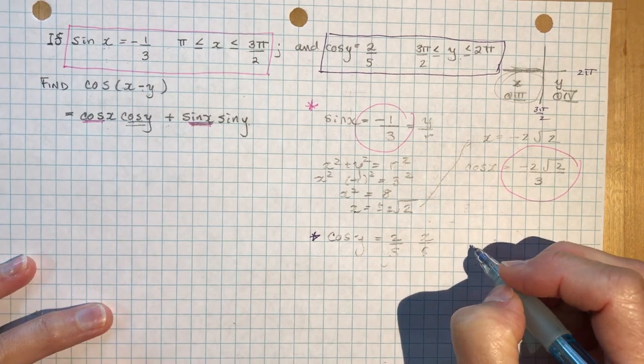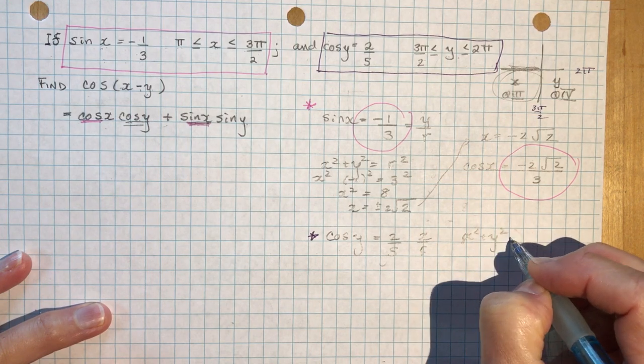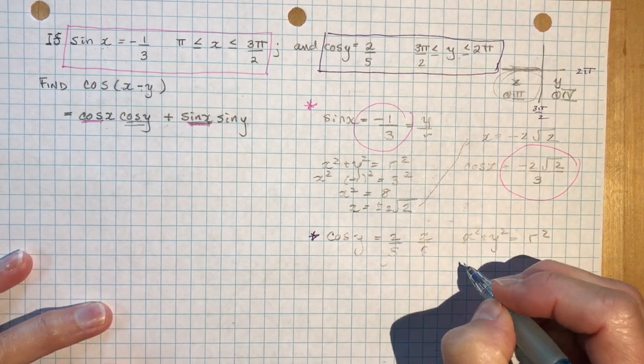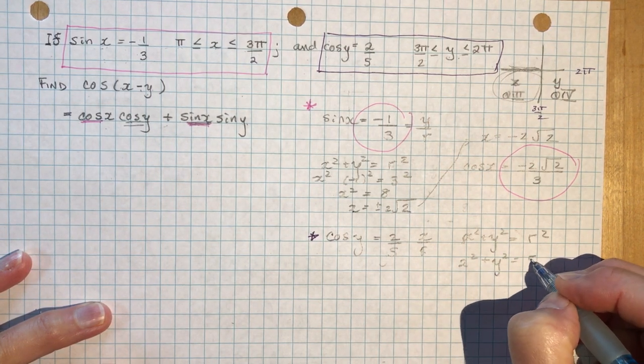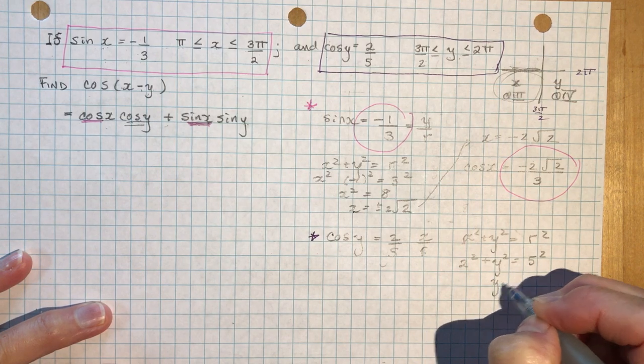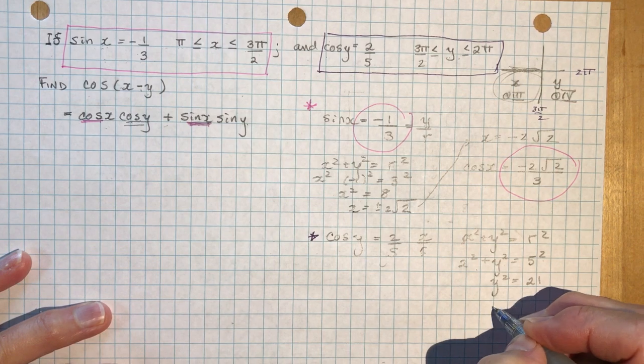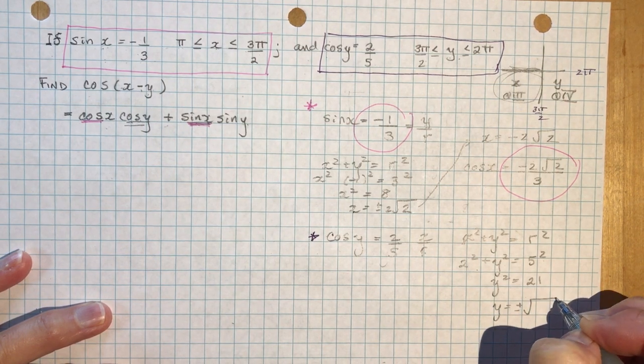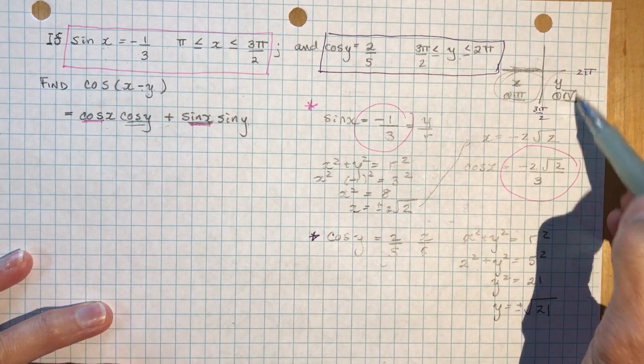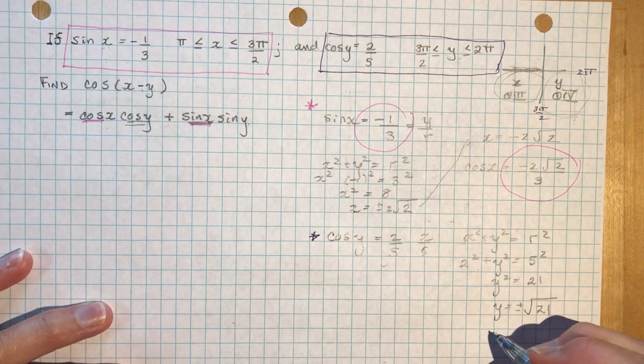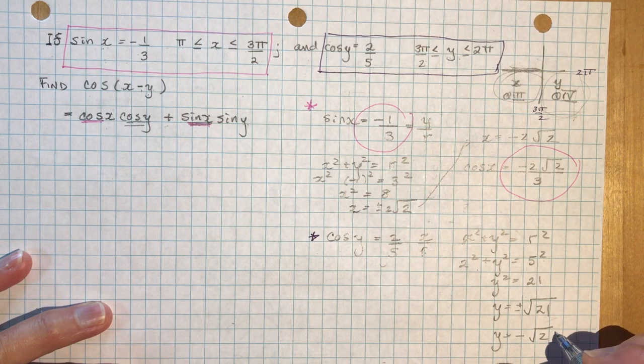So x squared plus y squared equals r squared. My x is 2, so 2 squared plus y squared is equal to 5 squared. y squared equals 25 minus 4, which is 21. So y is equal to plus or minus the square root of 21. But I'm in this quadrant. All the y values in this quadrant are negative. So y has to be negative square root 21.